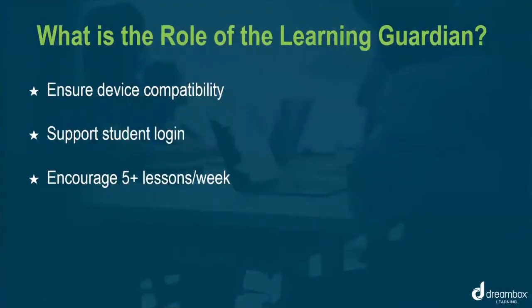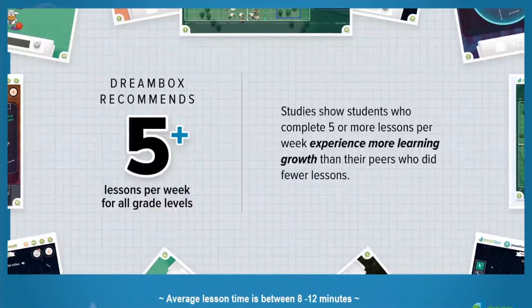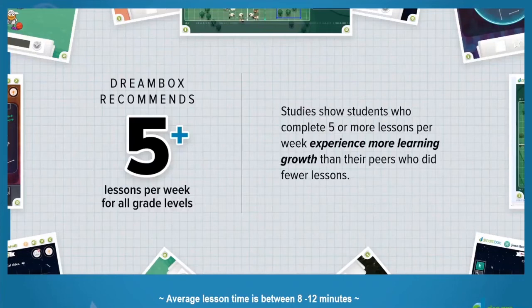The third expectation of the Learning Guardian is to ensure that a student completes five or more lessons per week. We recommend setting this learning goal with your child. DreamBox recommends completing at least five lessons each week for all ages. Students are able to view the lessons they have completed and track their progress along with their teacher. Some teachers may have different goals, so be sure to reach out to your child's teacher with any lesson completion questions.